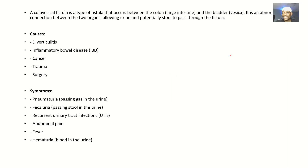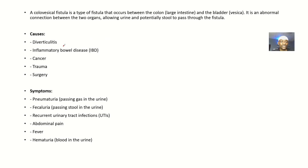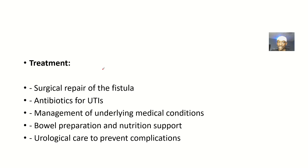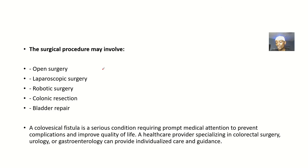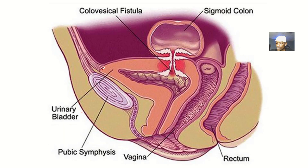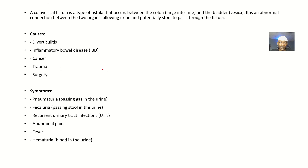This lecture covers the colovesical fistula under the following topics: causes, symptoms, treatments, and surgical procedure. Based on definition, the colovesical fistula is a type of fistula that occurs between the colon — which is part of the large intestine — and the bladder, which is also known as the vesical. That's why it's called colovesical.